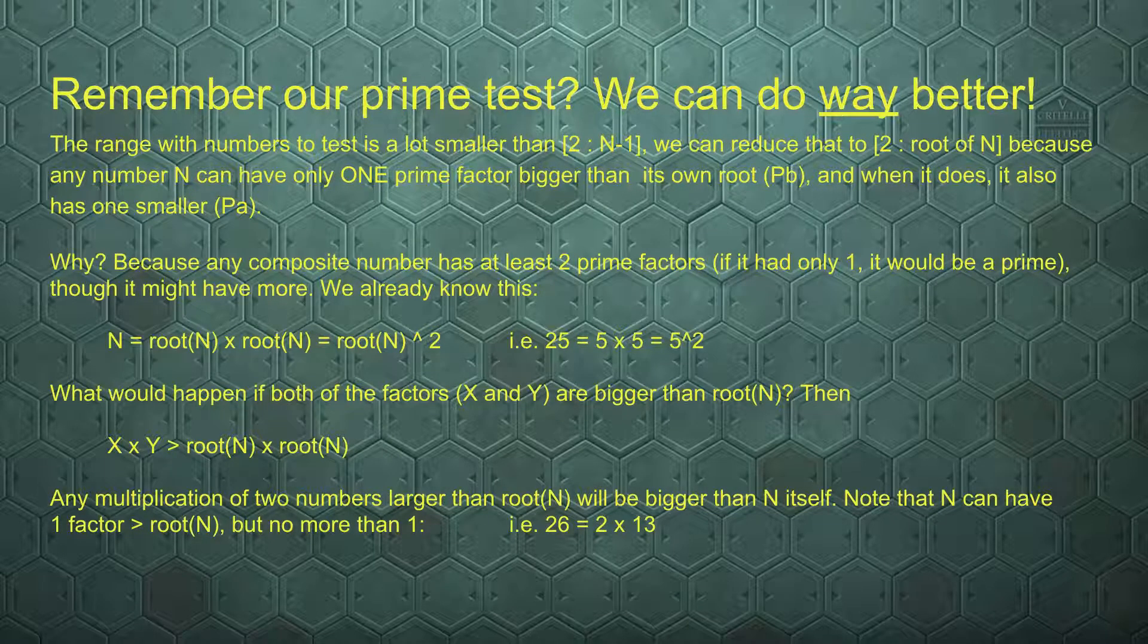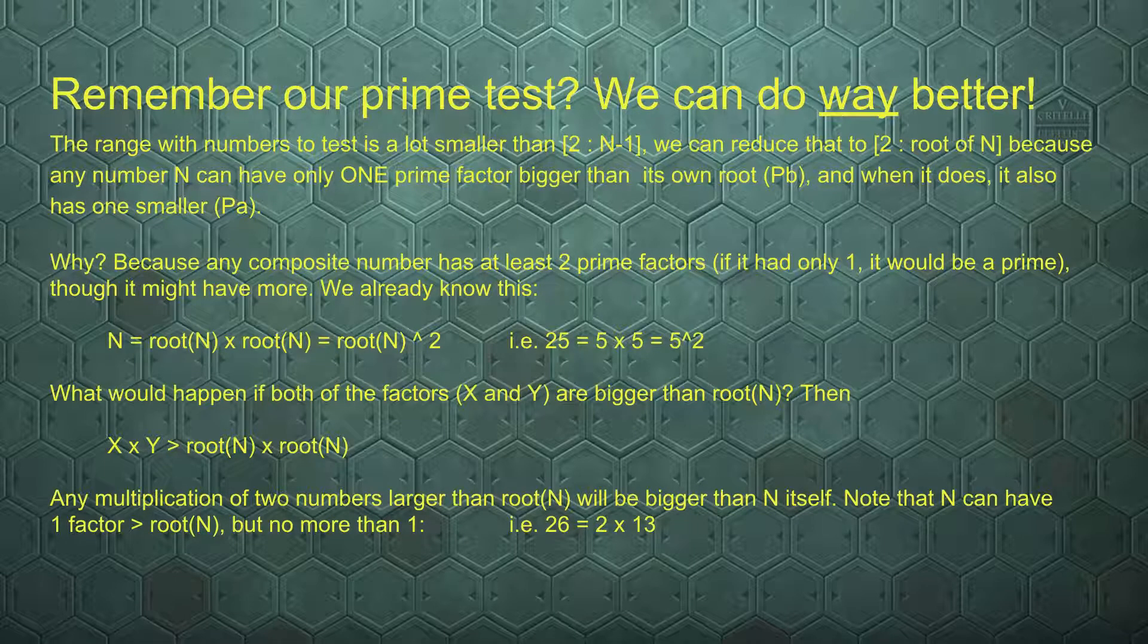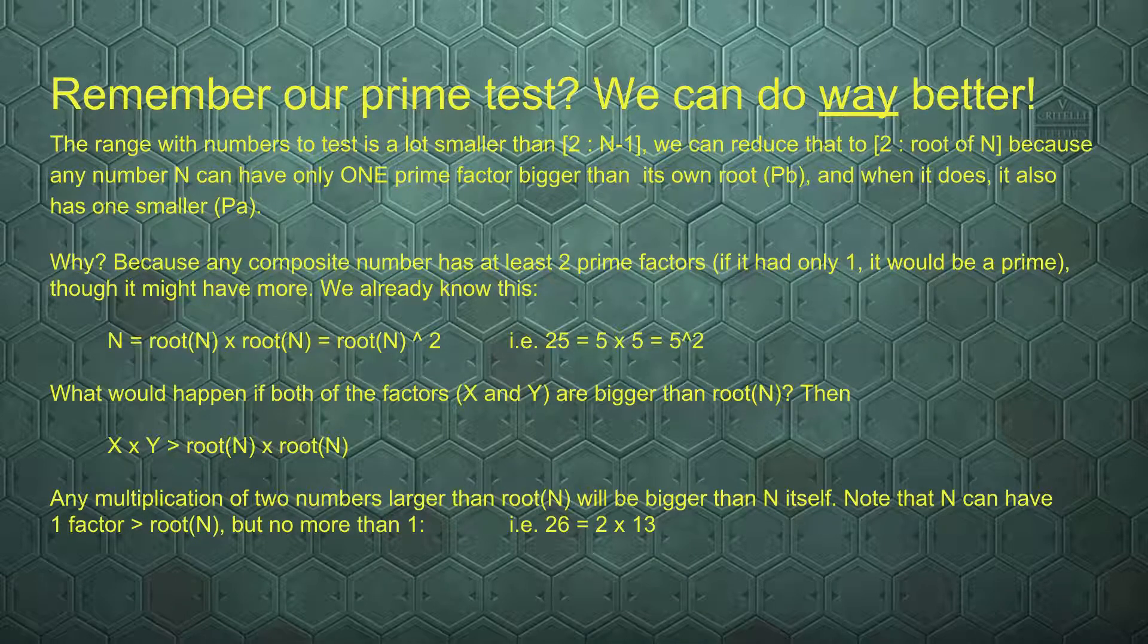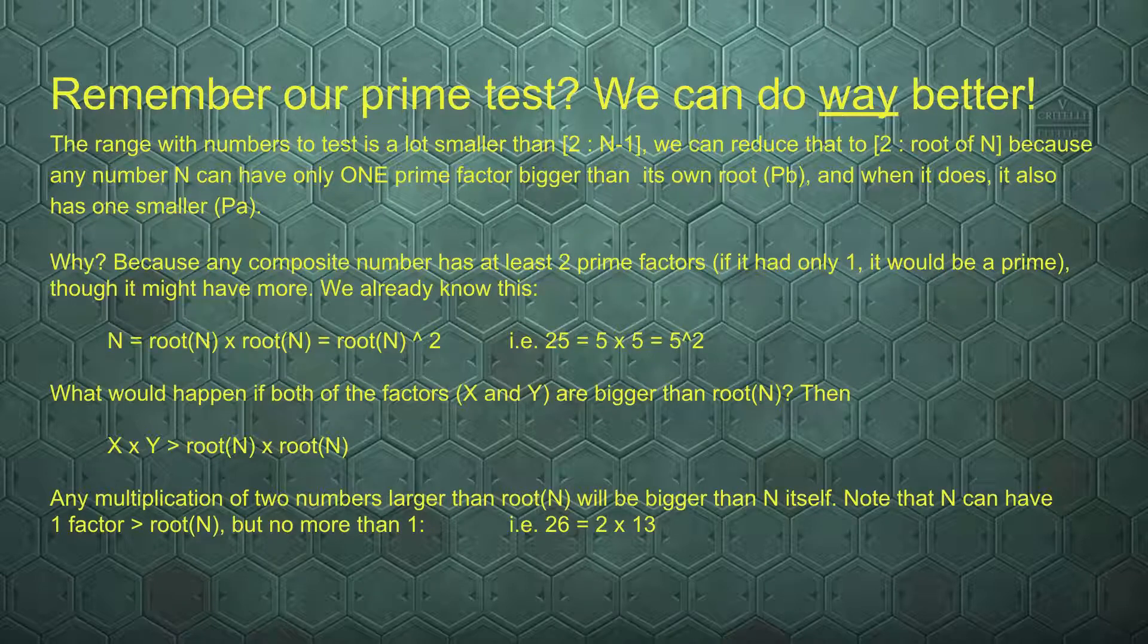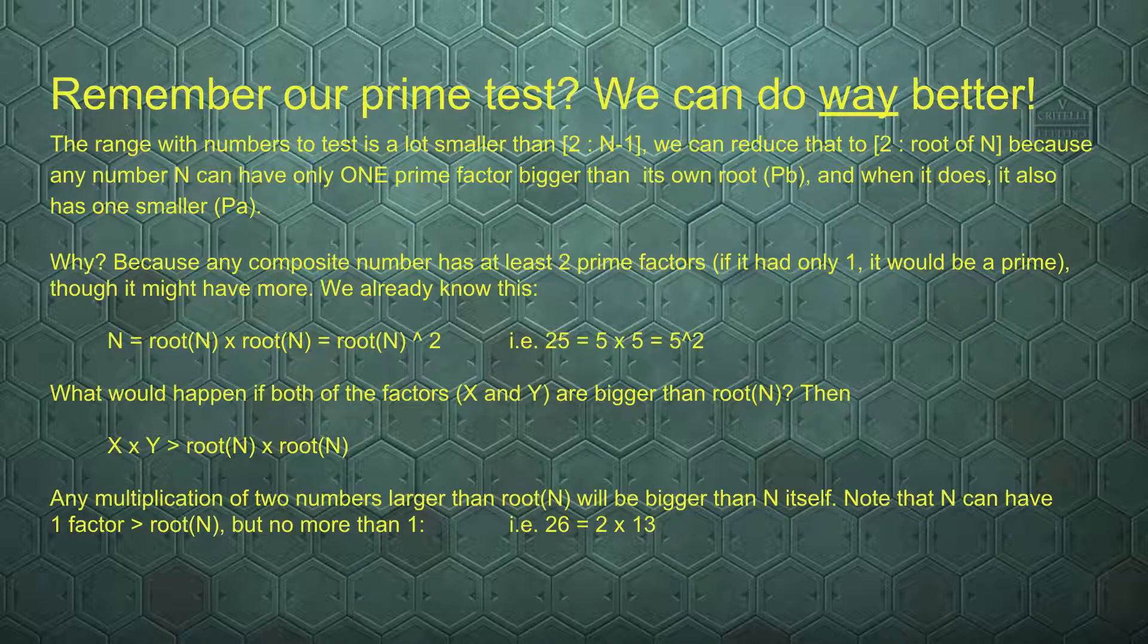Why? Any composite number has at least 2 prime factors. It might have more, it cannot have less. If it has only one prime factor, it is itself prime. Because the prime factorization shows us that we need to multiply at least 2 items to get a composite number.